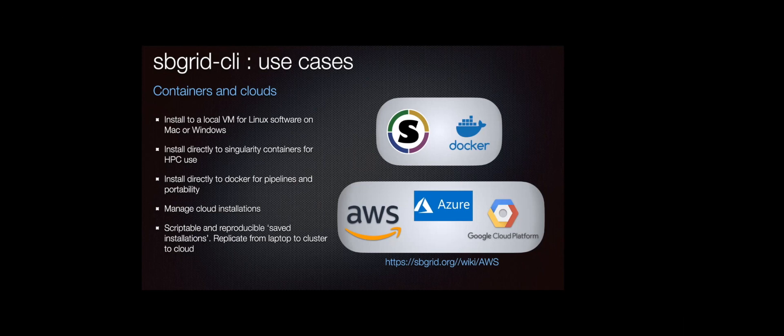If you're going to install on your local cluster, we still require this sort of SBGrid path — the slash programs path — and that can be a deal breaker for a lot of HPC sites. We're working to manage that, but the cloud doesn't have that problem and containers don't have that problem, so there are some ways to get around it right now.